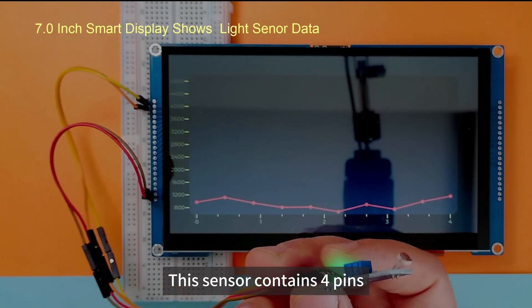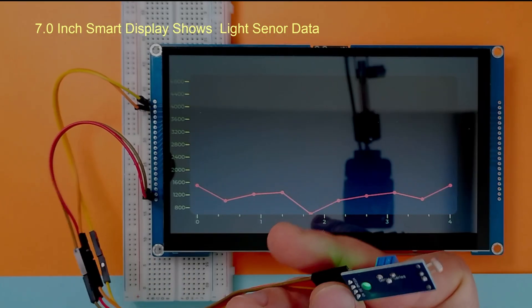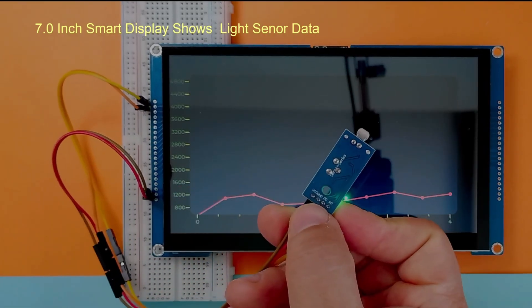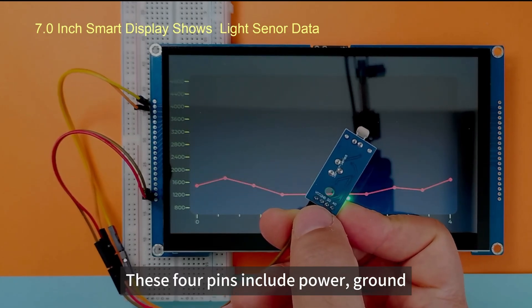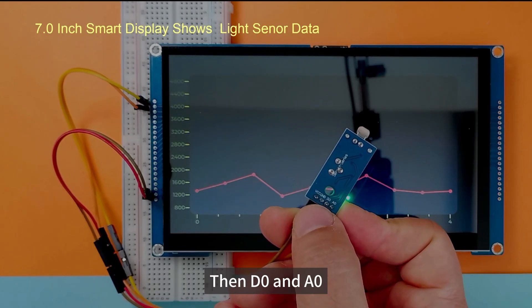This sensor contains four pins. These four pins include power, ground, then DO and AO.